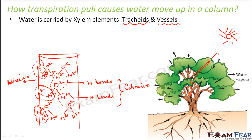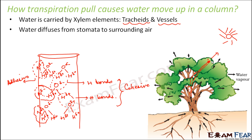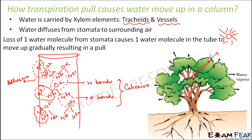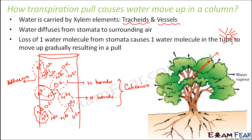This is the concept of transpiration pull. Water diffuses from stomata to the surrounding air because the concentration of water inside the leaf is higher — it receives energy from sunlight, evaporates, and diffuses out. Every time one water molecule is lost from the stomata, one water molecule in the tube moves up, gradually resulting in an upward pull due to cohesive and adhesive bonding of the water molecules.